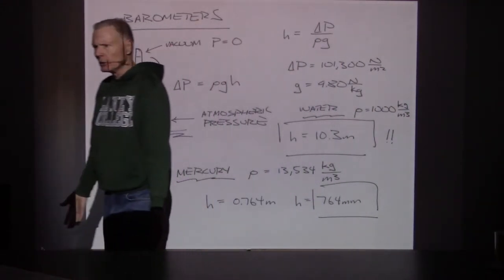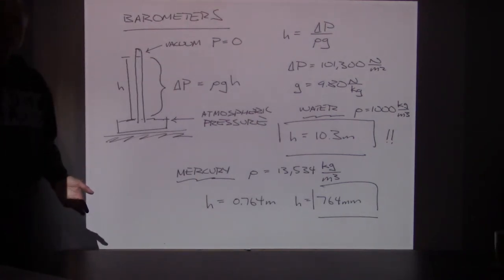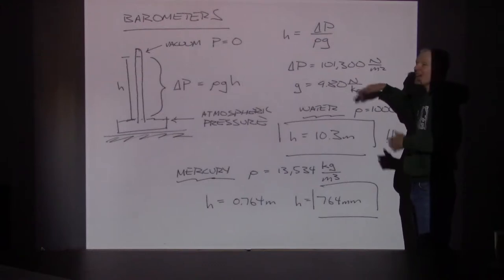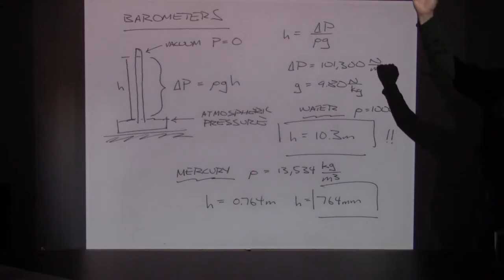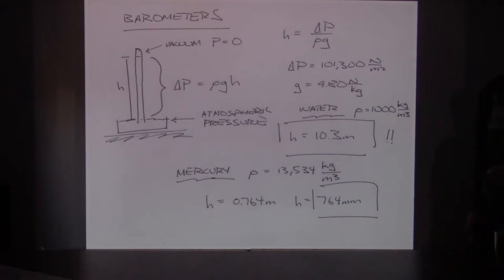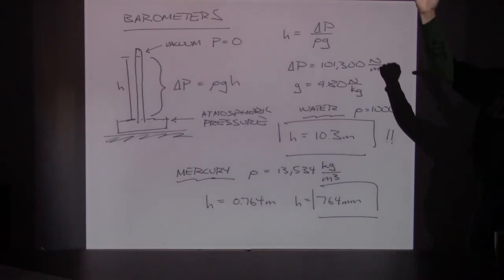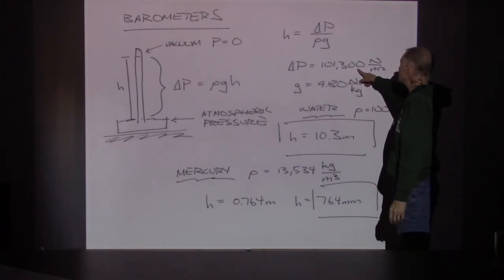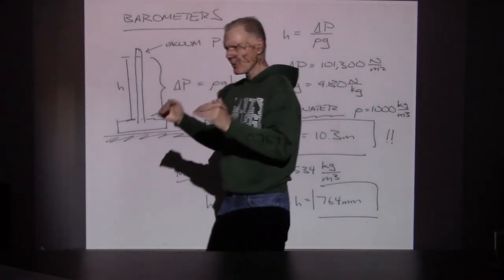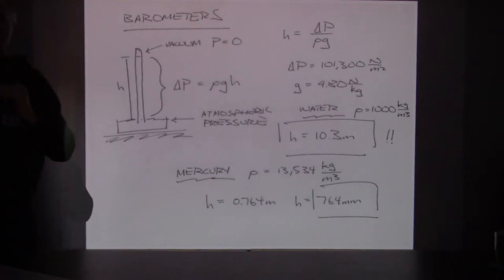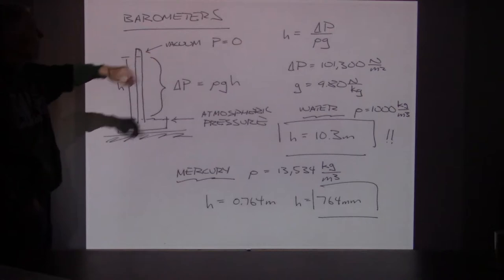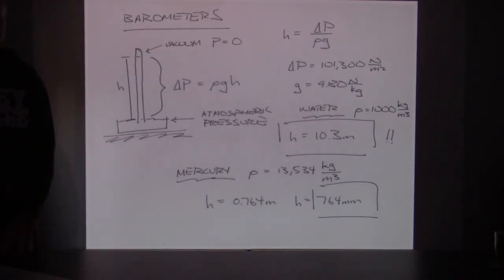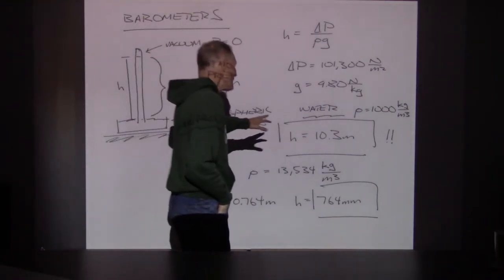10.3 meters doesn't seem very practical. A water barometer requires 10 meters of water to set up one atmosphere of pressure. Compare that to air: it takes the entire atmosphere — about 100 kilometers — to accumulate 101,300 N/m². It only takes 10.3 meters of water because water is so much denser. That's not very practical, so let's use mercury instead. Mercury has a specific gravity of 13.5 times that of water.